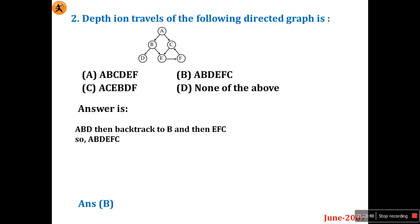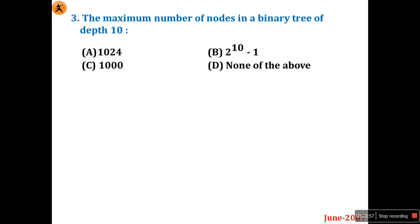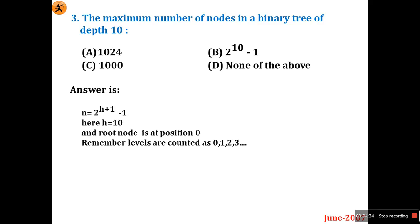Question three: the maximum number of nodes in a binary tree of depth 10. Using the standard formula, the maximum nodes = 2^(h+1) − 1, where h is the height. With depth 10, that is 2^11 − 1. However, the options given include 2^10 − 1 but not 2^11 − 1, so none of the given options is the right answer.